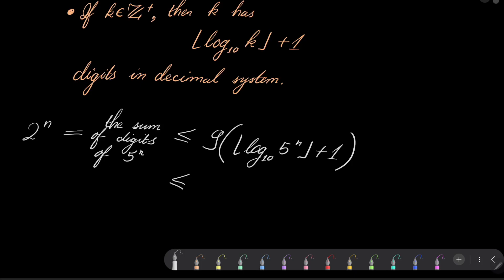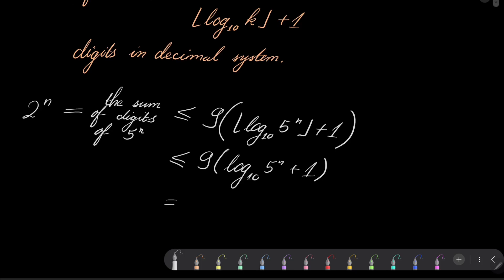But now this can be estimated by removing the floor, because floor of any number is less than or equal this number. And this equals 9 times decimal logarithm of 5 times n plus 9.